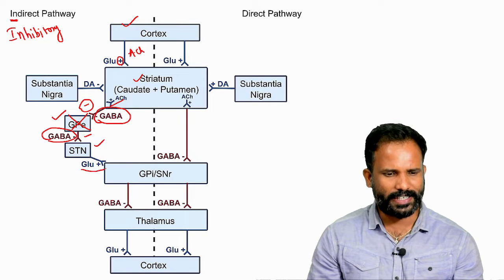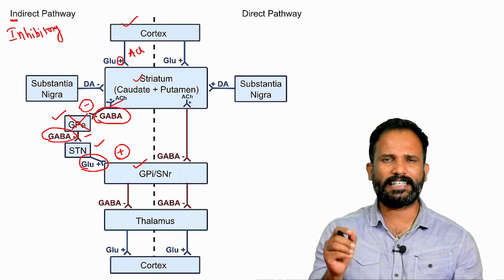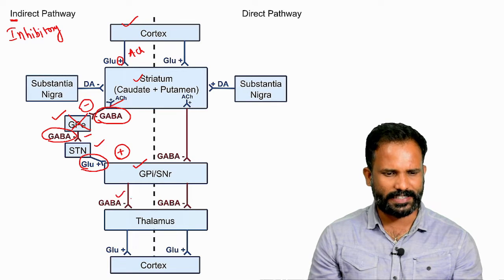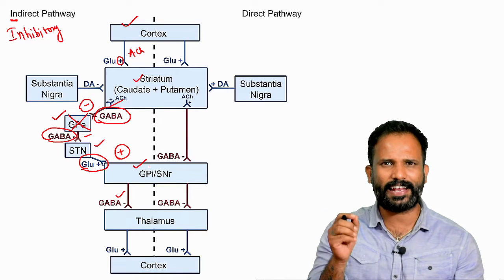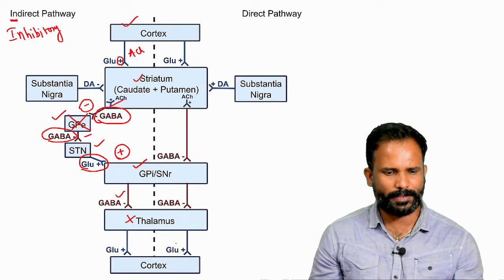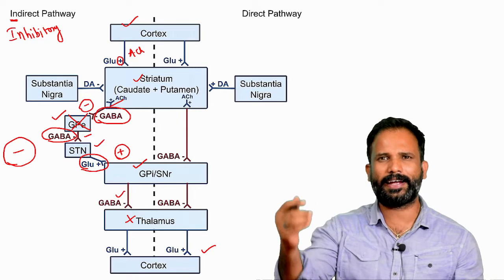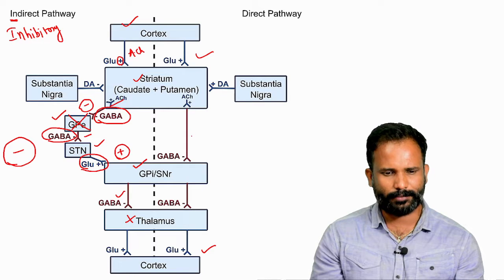The excited subthalamic nucleus releases glutamate, which stimulates globus pallidus interna. Globus pallidus interna then releases GABA, which acts over the thalamus, inhibiting it. If the thalamus is inhibited, it cannot excite the cortex. Therefore, the indirect pathway is inhibitory.